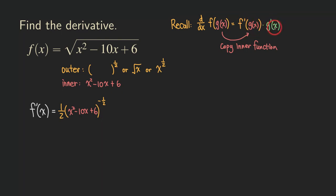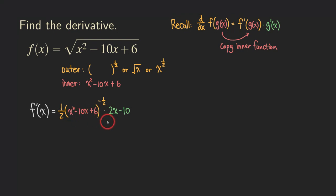Now the second factor is the derivative of the inner function — we take the derivative of x squared minus 10x plus 6 and multiply it by the first factor. The derivative of x squared minus 10x plus 6 is 2x minus 10. It's not okay to write it without parentheses, because without them you'd be indicating that only 2x is multiplied by the whole expression, and the minus 10 is not. We actually need the whole 2x minus 10 multiplied by one-half times x squared minus 10x plus 6 to the negative one-half. So it's important to put parentheses around the 2x minus 10.